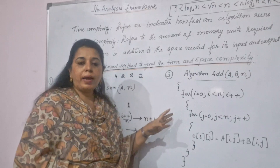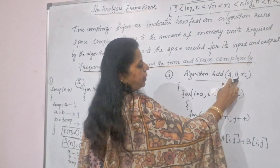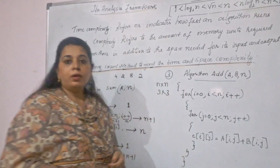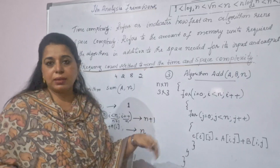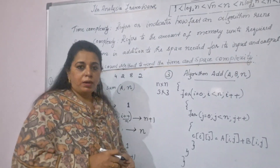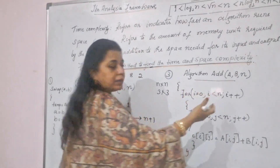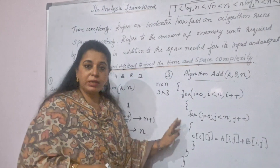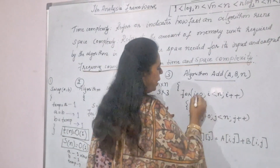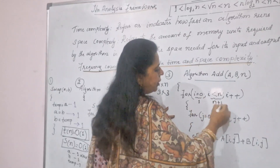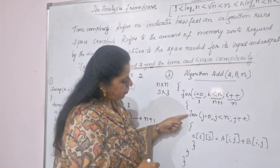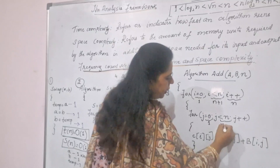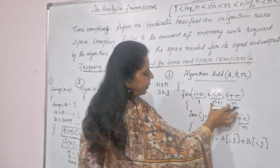To add matrices A and B, suppose the matrix order is n by n — for example 3 by 3 gives 9 elements in matrix A and 9 in matrix B, and you store the result in matrix C. Even though there may be some assignment statements, those will get excluded when applying the rules. The outer for loop: i equals zero executes one time, i less than n executes n plus one times, and i plus plus executes n times.